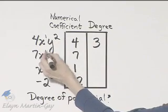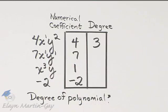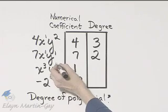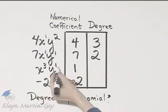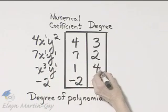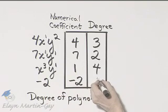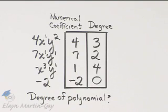An understood exponent of 1, understood exponent of 1, 1 plus 1 is 2. Understood exponent here of 1, so 3 plus 1 is 4. That's the degree of this term. And there are no variables here, it has a degree of 0.